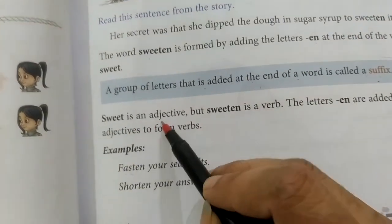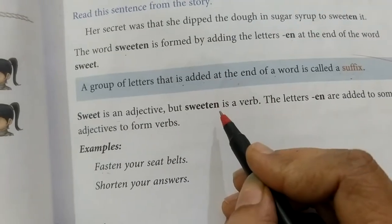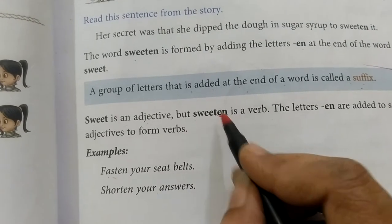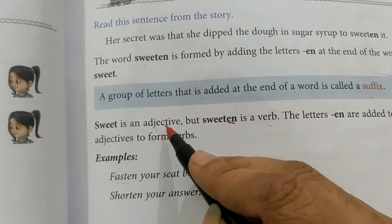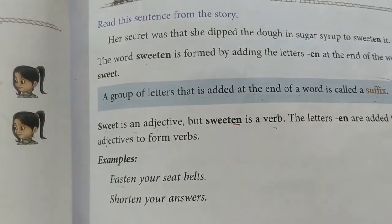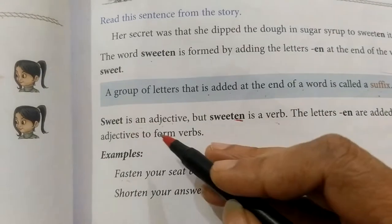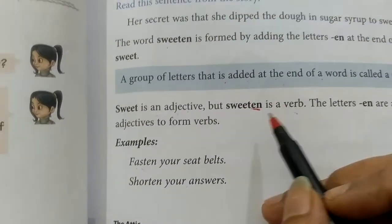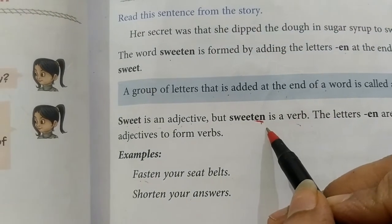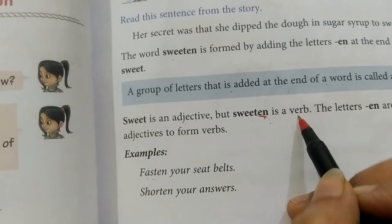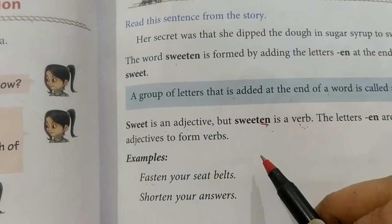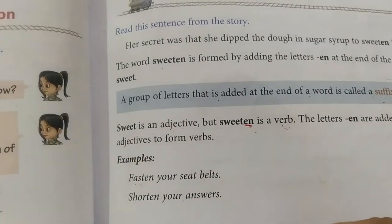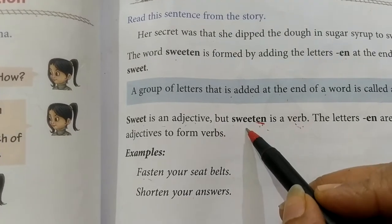For example, 'sweet' is an adjective — like 'My pudding is very sweet to eat.' If we add the suffix '-en' to 'sweet', it becomes a verb: 'sweeten.' For example: 'Afzal's mother used sugar syrup to sweeten the dough.' So 'sweeten' here is a verb formed by adding '-en' to the adjective 'sweet.'